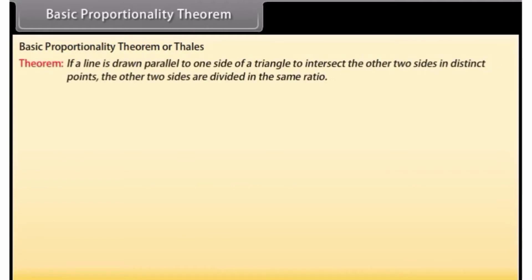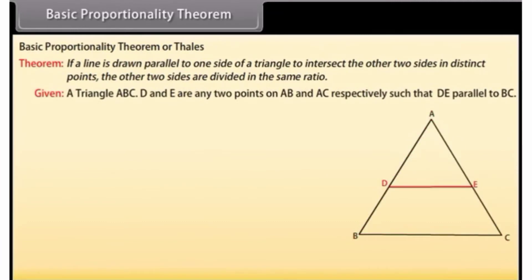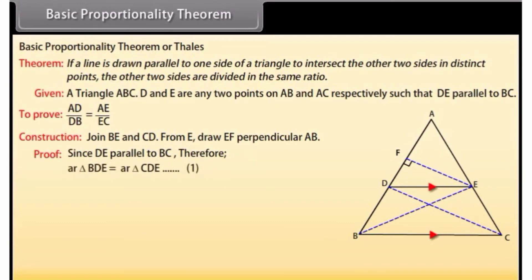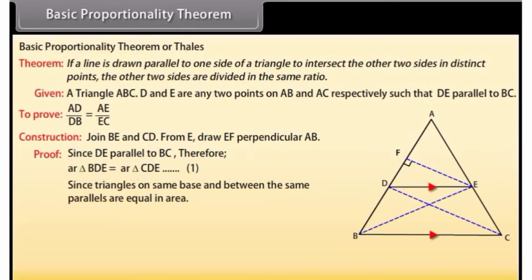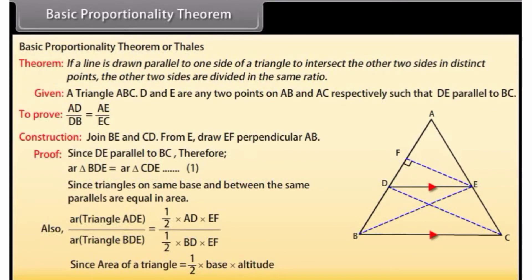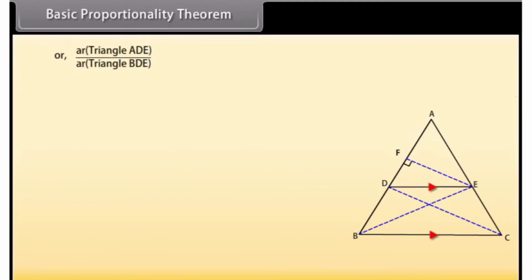Basic Proportionality Theorem: If a line is drawn parallel to one side of a triangle to intersect the other two sides in distinct points, the other two sides are divided in the same ratio. Given triangle ABC, D and E are any two points on AB and AC respectively such that DE is parallel to BC. To prove: AD/DB = AE/EC. Construction: Join BE and CD. From E, draw EF perpendicular to AB. Since DE is parallel to BC, area of triangle BDE equals area of triangle CDE.